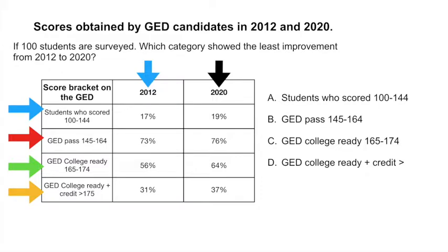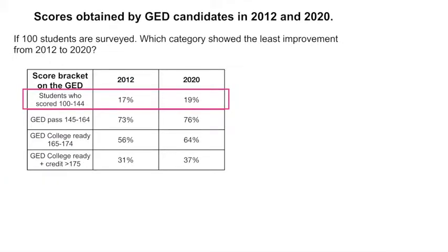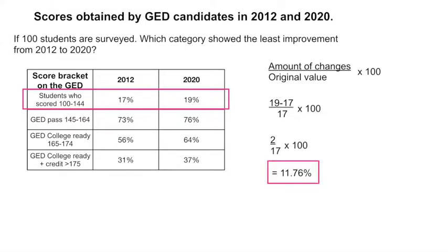How do you solve this problem? To find out the percentage improvement, you would use this formula: amount of change divided by the original value times 100. In this case, in 2020 there were 19% of students in this category minus the original amount, which was 17%, divided by 17, and multiply by 100. That would give you 11.76% difference.